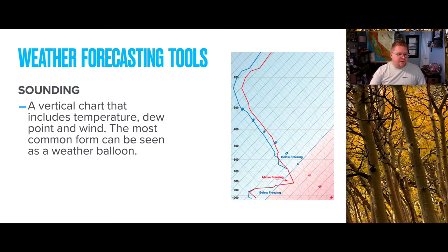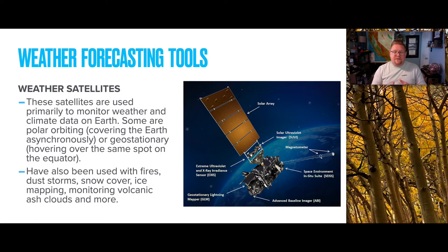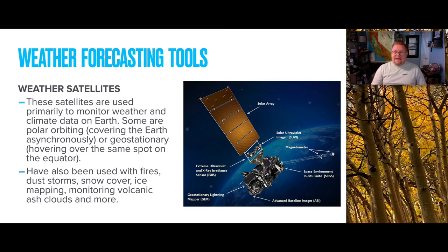Weather satellites are probably the most prominent forecasting tool you're familiar with. These satellites are used primarily to monitor weather and climate data on Earth. Some are polar orbiting, covering the Earth asynchronously, while others are geostationary, hovering over the same spot along the equator. They've also been used for forest fires, dust storms, snow coverage, ice mapping, and volcanic ash clouds — we can utilize this imagery for more than just weather data, including real-time photographs.